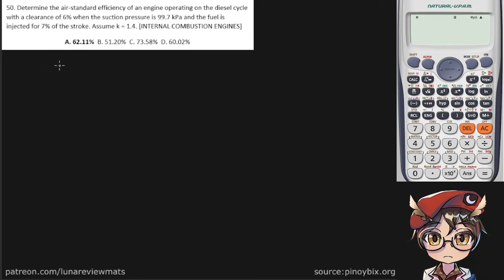Determine the air standard efficiency of an engine operating on the diesel cycle with a clearance of 6%. The suction pressure is 99.7, that's P1, and the fuel is injected for 7% of the stroke. Whenever there's a percent of the stroke, that usually refers to the percent cutoff, which is 0.07 or 7%.